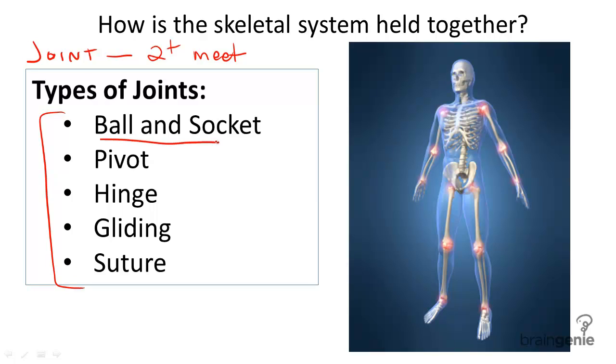One joint is called the ball and socket joint. For example, the hip and the shoulder are ball and socket joints. Ball and socket joints is where a ball-like surface fits into a cup-like depression in another bone, and it allows the widest range of motion, such as swaying arms around.